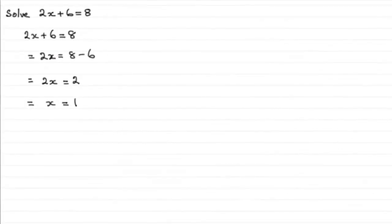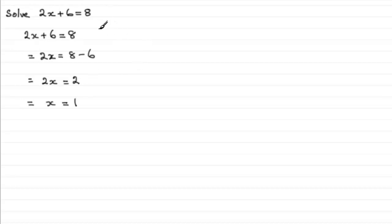Hi. All too often I see people write down solutions to equations, and here's a typical example of the kind of thing that I see. The answer is 1 — x does equal 1. It works: 2 times 1 is 2, plus 6 gives us 8. But this is what I would call a very poor layout for an equation. Can you see anything wrong with this, or is this something you would most probably do?